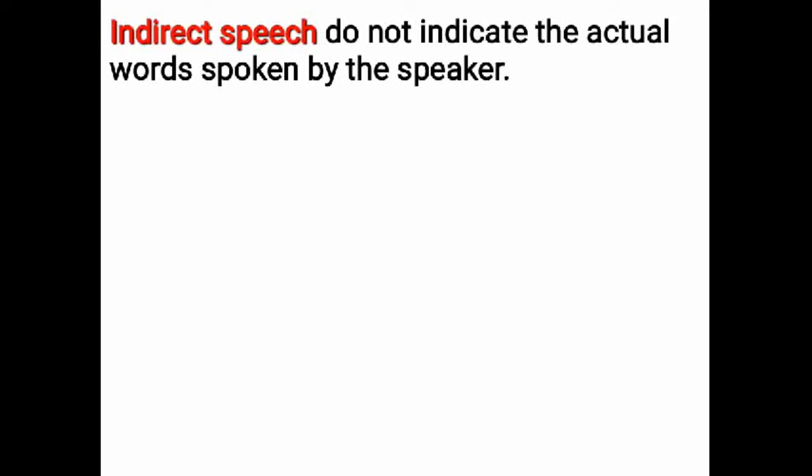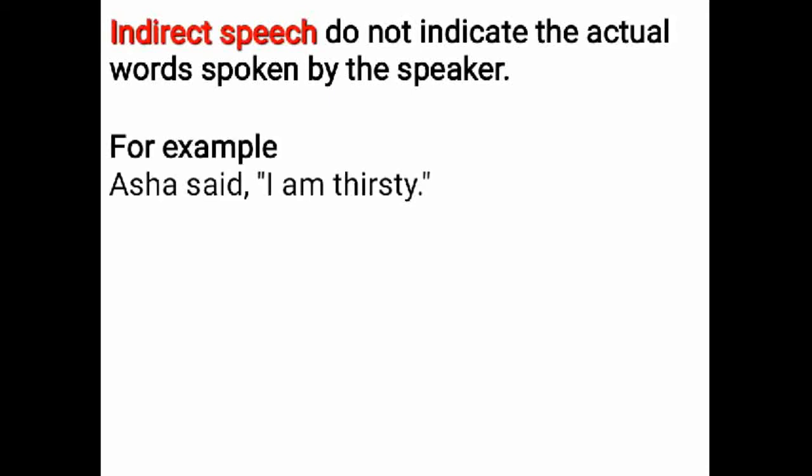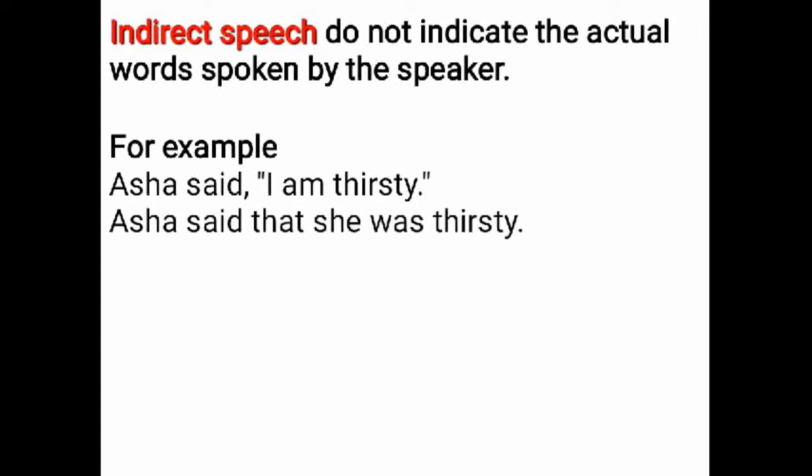For example, the direct speech is: Asha said, 'I am thirsty.' You have to change this sentence into indirect speech. The indirect speech is: Asha said that she was thirsty. We don't have to put a comma and inverted commas in indirect speech.